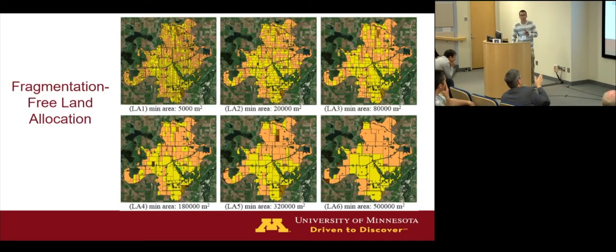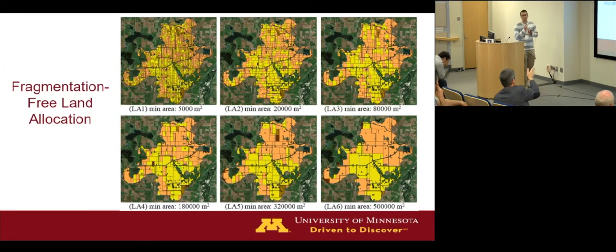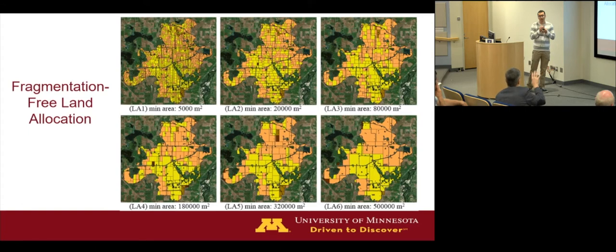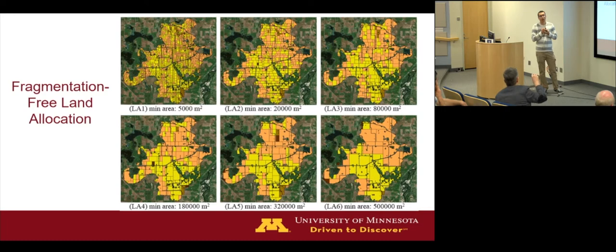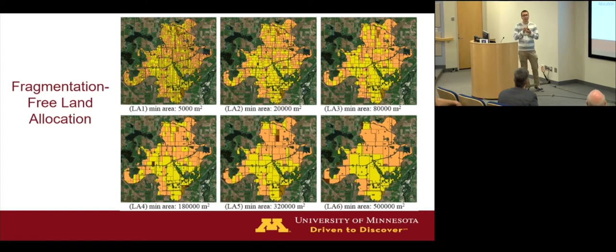Audience: It strikes me that you're requiring a fixed minimum area for each patch. Have you looked at some sort of dynamic minimum — one that allows smaller regions in some areas and larger ones in others, depending on how problematic those regions are? Speaker: Yes, that's something we can do. That's an interesting idea. Thanks.